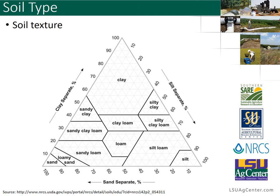This is an example of a soil texture triangle provided by NRCS. This can be found easily by searching for a soil texture triangle online. This is how you would determine the general classification of your soil based on the percentage of sand, silt, and clay. As an example, a clay loam has about 35% clay, about 35% silt, and about 30% sand. If you line all those lines up, it'll fall within the clay loam box, and so if you knew your percentages, you can classify your soil type and determine how much water it can hold.